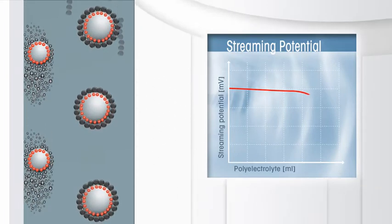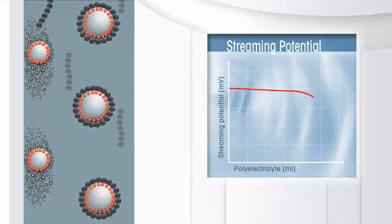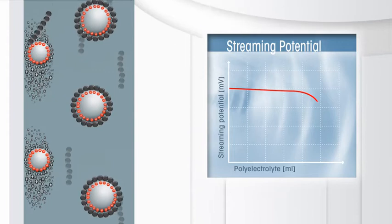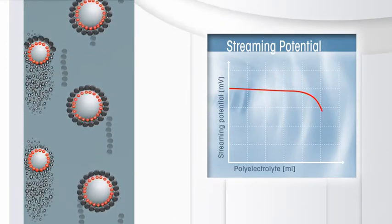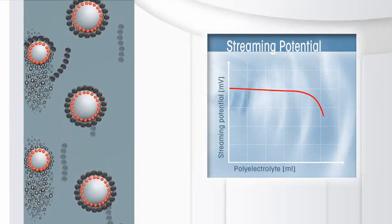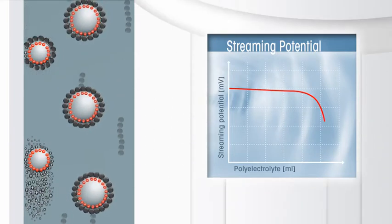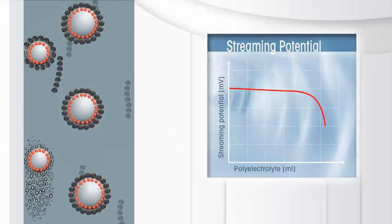The adsorbed particles are then neutralized by the titrant. These fixed particles have a strong influence on the height of the streaming potential. Their neutralization is reflected in a fast-decreasing measuring signal in the particle charge detector.